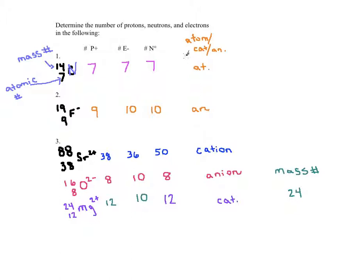Remember, as far as the ion classification column is concerned: if it has no charge like nitrogen, it's an atom; if it's a negative charge, it's an anion; and if it has a positive charge, it's a cation. And that's it.